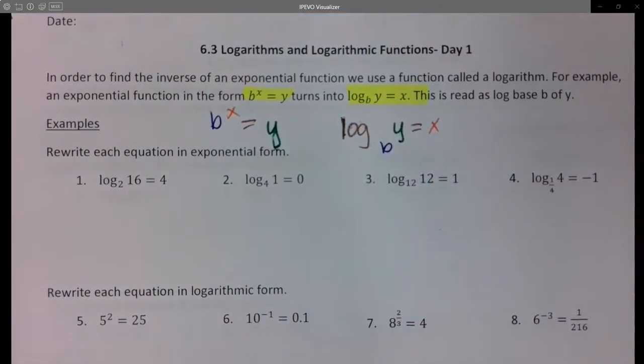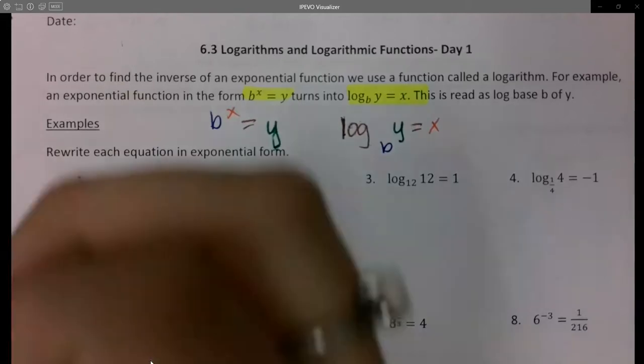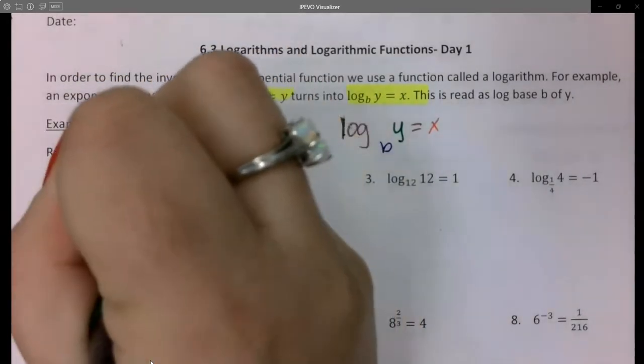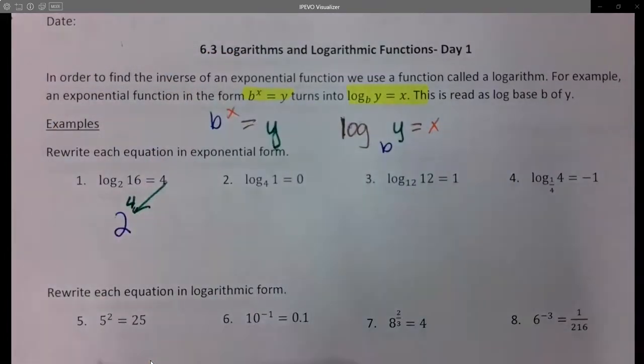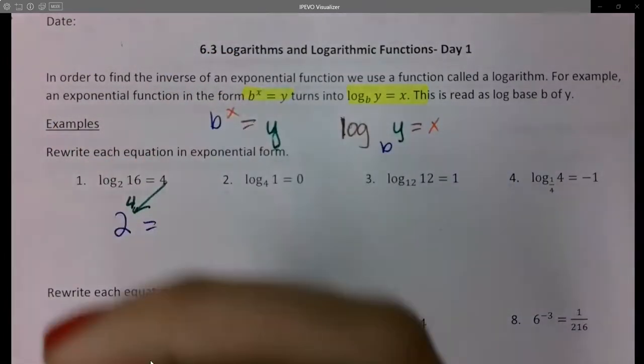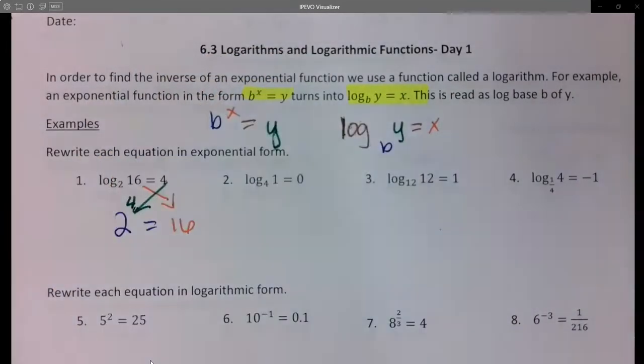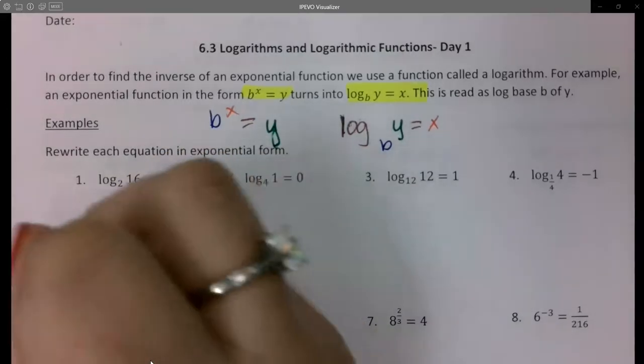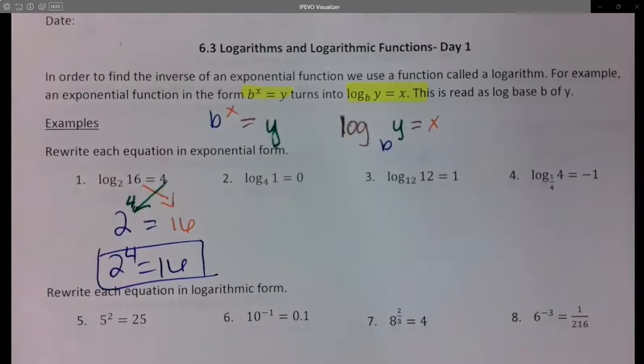So basically all this is doing is switching the exponent and the answer. These are like inverse. So it asks me to rewrite in exponential form. 2 is my base and then this is going to become my exponent of 4, and then the 16 is going to be my answer. So I'll rewrite that without the arrows. It's 2 to the 4th equals 16. All it wants me to do is rewrite. I don't have to do any solving.